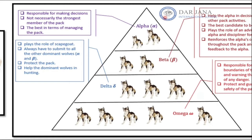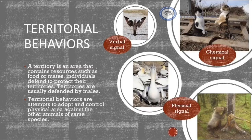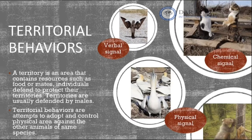Alpha wolves manage and control all available resources. Moving down through the ranking system, the functions of these animals diminish. For example, the omega animals are responsible for watching the boundaries, protecting the territory, and warning the group of any approaching danger.